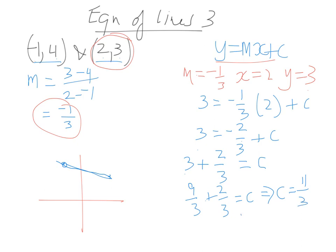So our equation ends up being y equals negative 1 over 3x plus 11 over 3. And that's it. That's how we go about solving that.